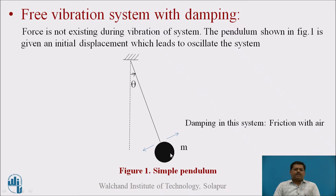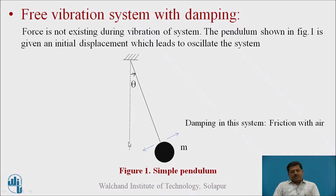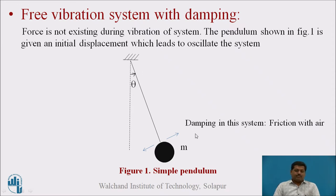A simple example is the simple pendulum — a free vibration system with damping. No external force exists during the vibration of the system. If some initial displacement is given, the pendulum will start to oscillate about its neutral position. Without any obstacle or stopping phenomena, it will come to rest at the neutral position. This is only because of friction with the air. The amplitude of the pendulum reduces after every cycle, meaning energy is dissipated and finally the pendulum comes to the neutral position. This phenomenon of friction with air is damping in this system.